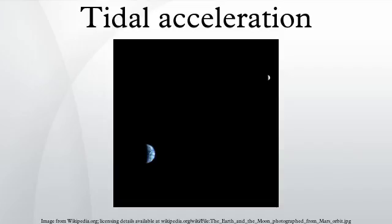Tidal rhythmites are alternating layers of sand and silt laid down offshore from estuaries having great tidal flows. Daily, monthly and seasonal cycles can be found in the deposits. This geological record is consistent with these conditions.